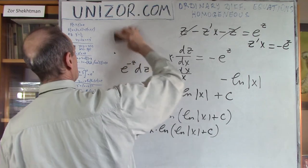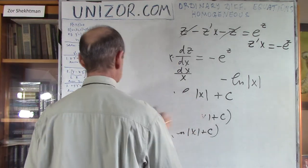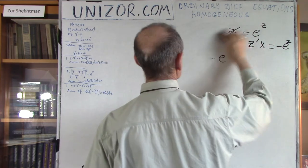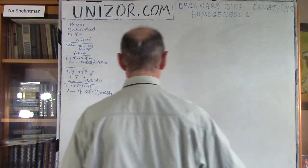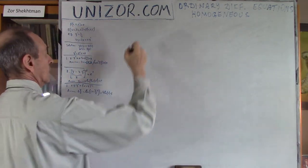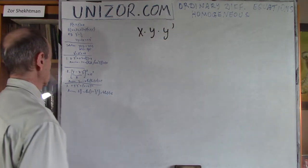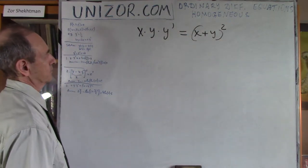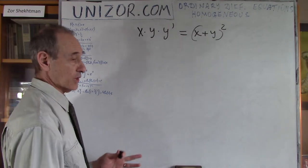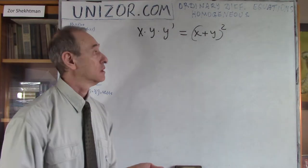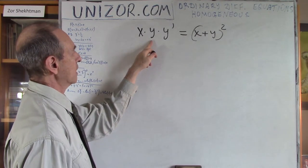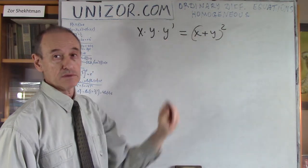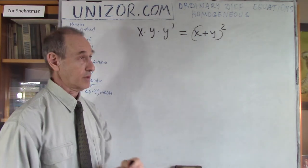The third example is: x·y·y' = x² + y². Is it homogeneous? Yes: replacing x with lambda·x and y with lambda·y gives lambda² on both sides, so the lambda² factors cancel. It is homogeneous.